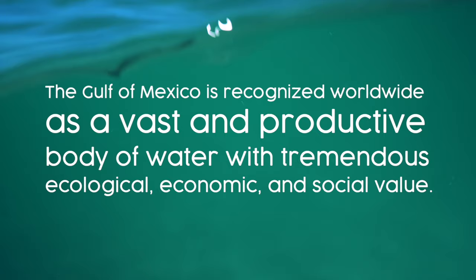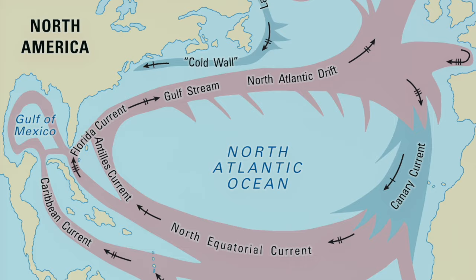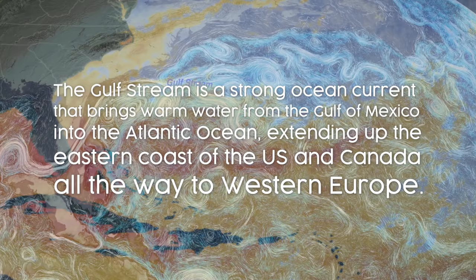As far as global warming goes or rising water goes, it all starts at the Gulf of Mexico. So it's an engine that drives the climate of mostly northern Europe and along the eastern coast.